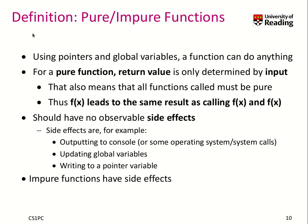Let's talk now about pure and impure functions. When you use a pointer and we have global variables, a function can basically do anything. We have therefore a definition: a pure function. In a pure function, the return value is only determined by the input arguments and not by any global variable, any side effects, and so on.